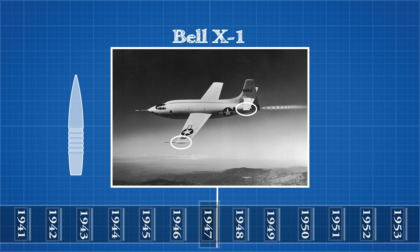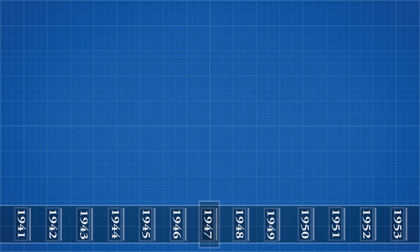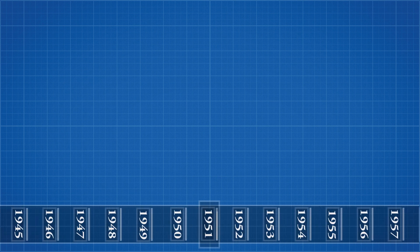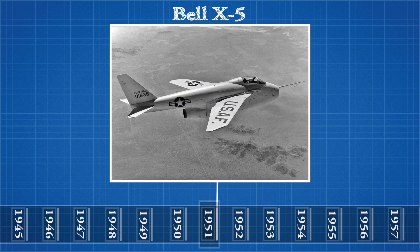The realization that the swept wing may hold the key for high-speed flight came at the end of World War 2. In 1951 the Bell X-5 was released, and its design was mostly based on a captured German prototype. The Bell X-5 had the special ability to change its sweep angle during flight, making it the perfect test object to investigate the aerodynamic advantages of the swept wing.